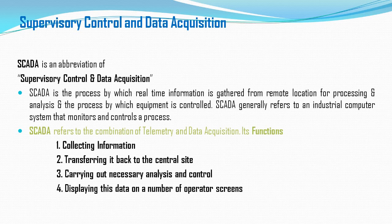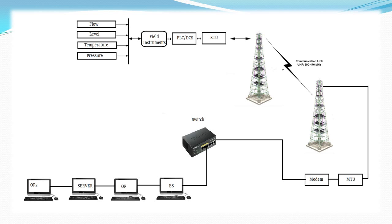Operators sitting in the SCADA control room can visualize everything — temperature at the plant, pressure at the plant, level at the plant. All this information can be seen on screens. Additionally, alarms can be visualized and operators can act accordingly.